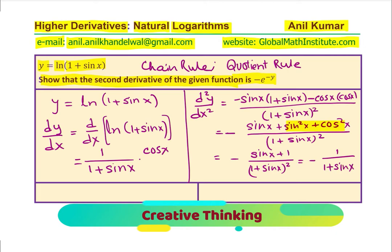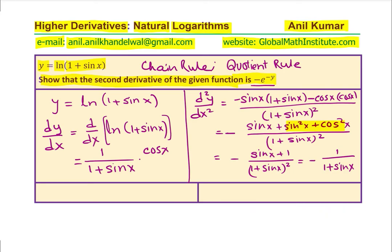So, we do get the derivative as cos x over (1 + sin x) and the second derivative is minus 1 over (1 + sin x). Now, how do we write this in the required form, which is minus e to the power of minus y? Well, let us now explore the given function to us.